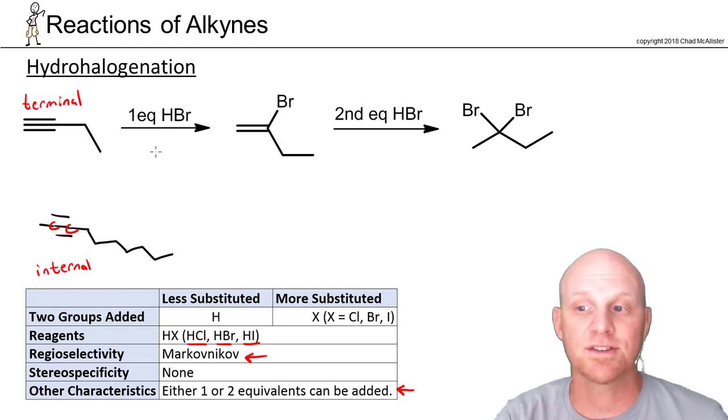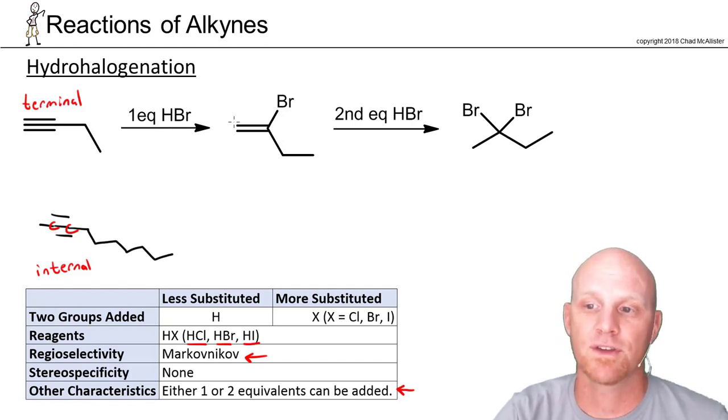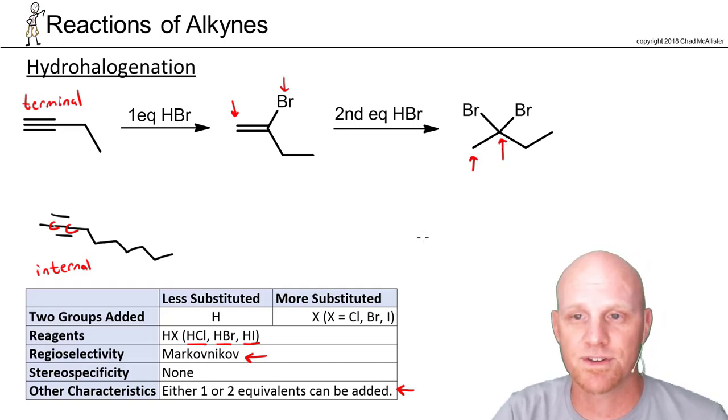For hydrohalogenation, it's definitely Markovnikov. The H got added to that less-substituted side, and the bromine got added to the more-substituted carbon. The second equivalent does the same thing. We'll add another H on that less-substituted side and another bromine on the more-substituted side.